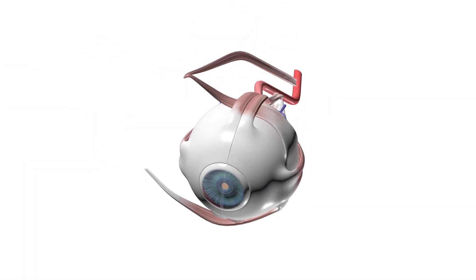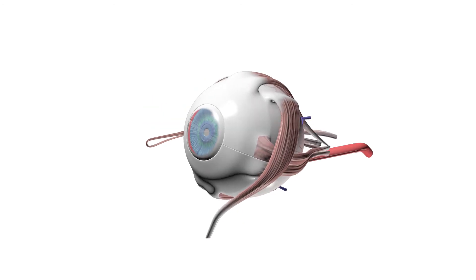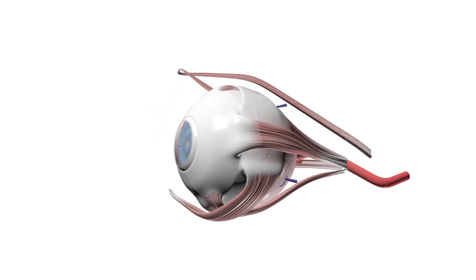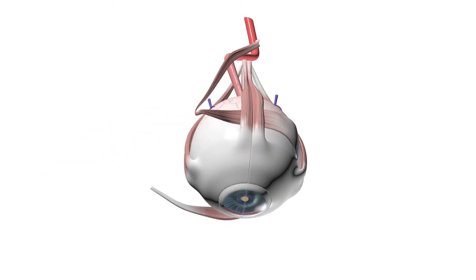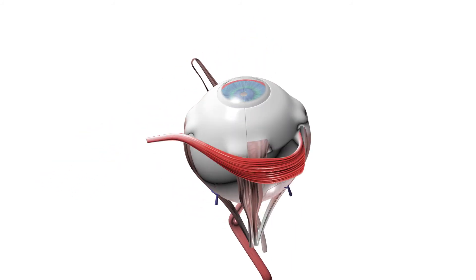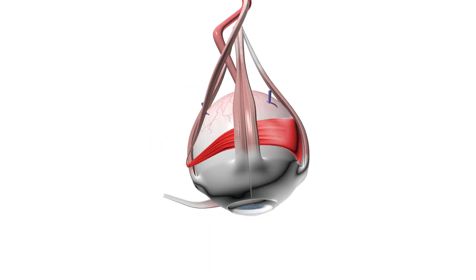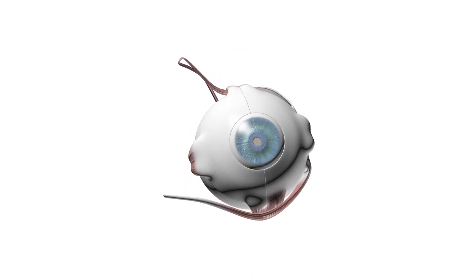Extraocular muscles: the six muscles that move the globe. Medially — medial rectus. Laterally — lateral rectus. Upward — superior rectus and inferior oblique. Downward — inferior rectus and superior oblique. Torsionally — superior and inferior obliques.